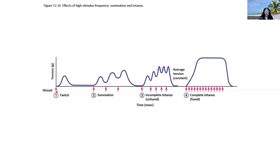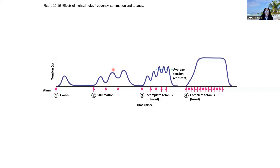Here is our action potential — the initial stimulus. Here's one twitch generating X amount of tension or force, then the muscle relaxes. With another action potential, the muscle generates force but notice it doesn't fully relax. Whereas for Treppe, we had complete relaxation — tension went all the way to zero in between each action potential. For summation, that doesn't occur. The muscle doesn't fully relax, so we can better explain why the next action potential generates even more force — because we're not starting from baseline; we're starting from an already contracted sarcomere.